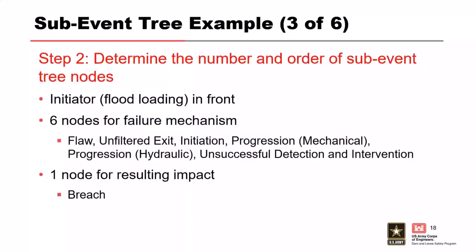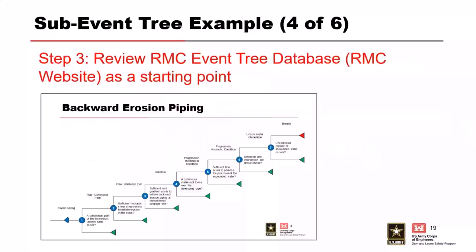Step two: determining the number and order of sub-event tree nodes. The initiator — flood loading — comes first. Then we include a node for each event in the step-by-step failure progression, from flaw all the way through to unsuccessful detection and intervention. Finally, we have a node for the resulting impact — breach. This brings us to a total of seven nodes in addition to the initiating event for our sub-event tree.